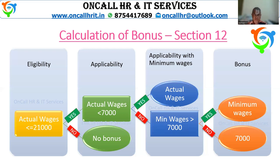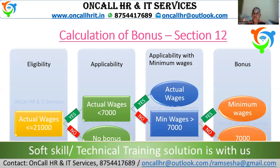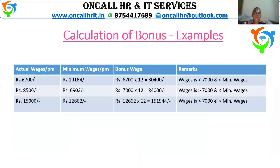To summarize: if wages is less than or equal to 21,000, the employee is eligible for bonus. If wages is less than 7,000, actual earnings are taken for calculation. If wages is more than 7,000, check whether minimum wages is more or less than 7,000. If less, calculate on 7,000; if more, calculate on minimum wages. Example one: a person drawing 6,700, minimum wages is 10,164.